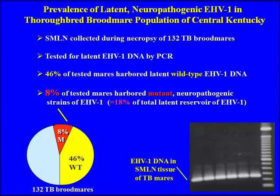This is some of Dr. Allen's work comparing the difference between the wild strain and the mutant strain as far as incidence of latency in thoroughbred mares. Forty-six percent were wild strain — no surprise — and a smaller percentage, eight, were the mutant strain. This was done some years ago, but I don't think we'd see a lot of difference today.